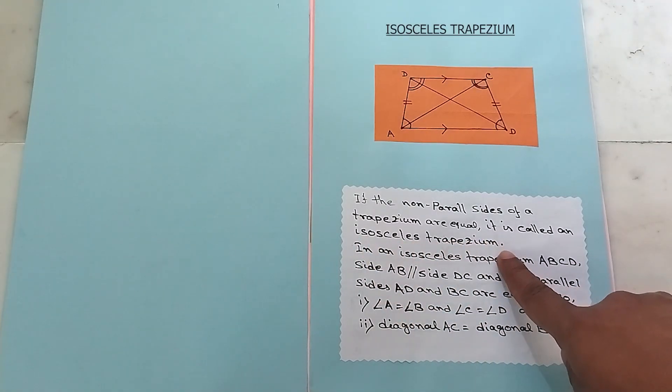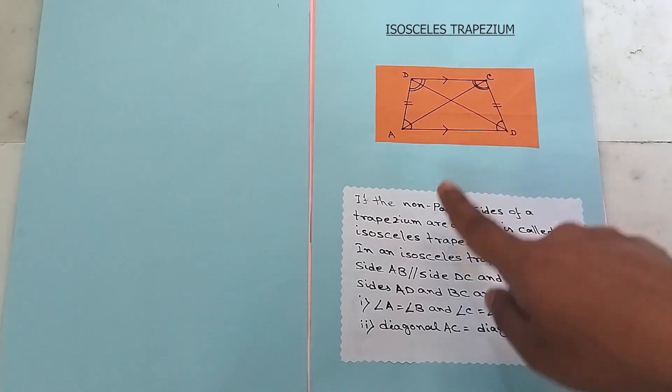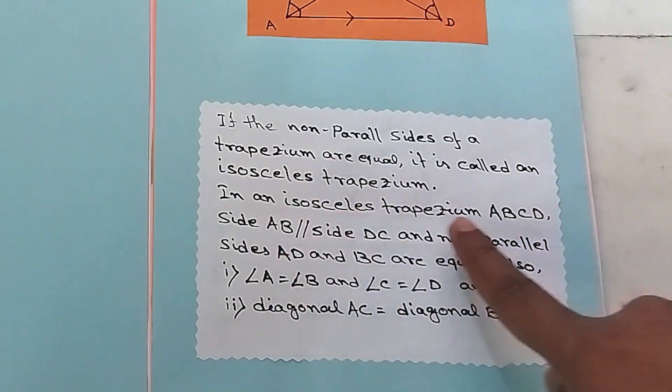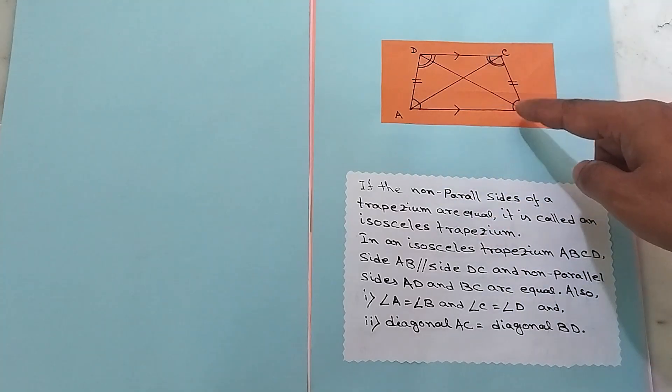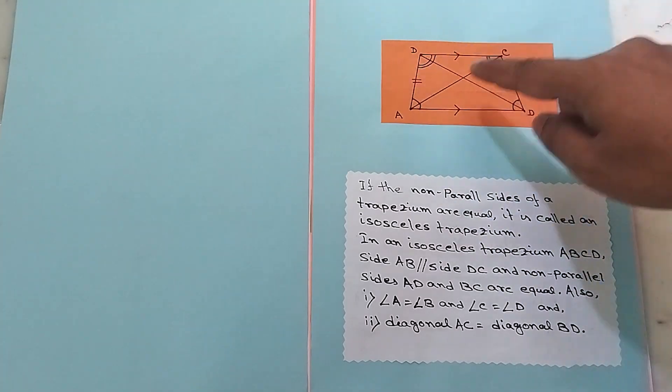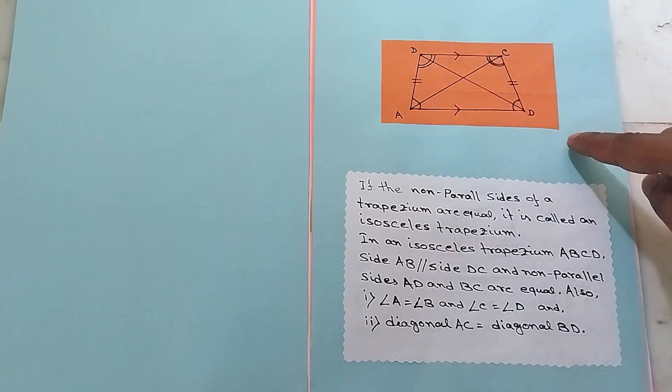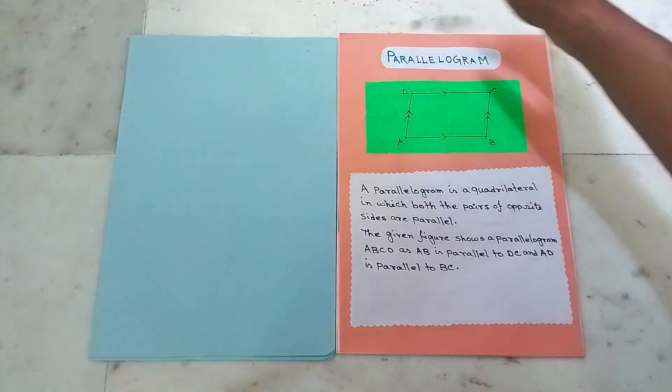The sides of the quadrilateral may be equal, unequal, parallel or irregular, which forms the basis of varying shapes in these four-sided shapes. Whatever may be the external shape, every quadrilateral has four sides, four vertices, and with all its angles adding up to be 360 degrees.